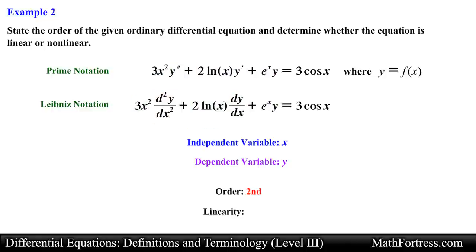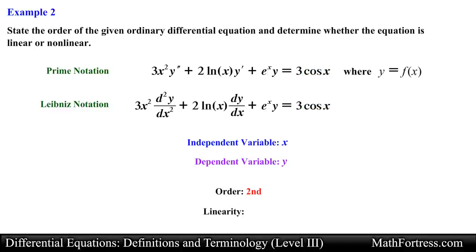The final thing to check is that any transcendental functions are written in terms of the independent variable x. This ODE contains three transcendental functions: we already checked the natural log and exponential function, and now we verify that the trigonometric function cosine is also written solely in terms of x. All three requirements are met, so we classify this ODE as a second order linear ODE.